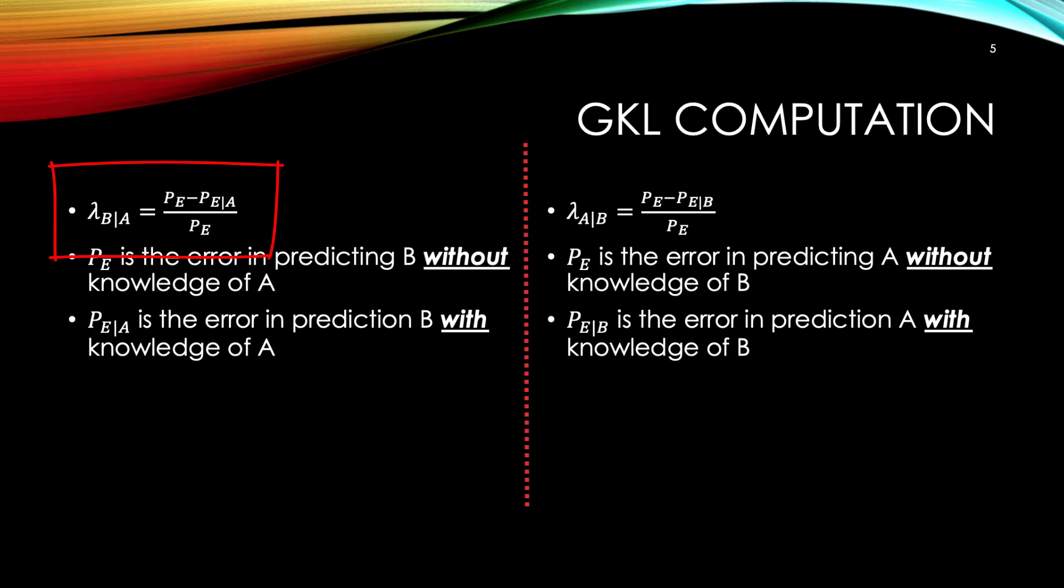Let's just focus on the left side. GKL of B given A is defined as P of E minus P of E given A over P of E. What is P of E? P of E is the probability of the predictive error of B. When we know nothing about A and the only thing we know is B, for example its probability mass function, P of E is the error of predicting B. What is P of E given A? P of E given A is the probability of the predictive error of B given that we know A.